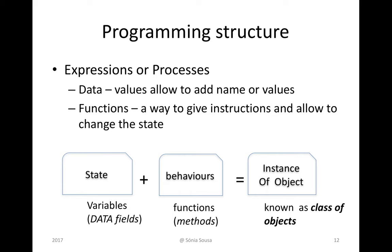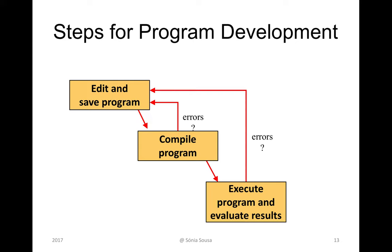A programming structure is based on a state that contains variables or data with values, and it has behaviors. A state plus a behavior represents an object in the real world. In terms of programming development, there are three main steps: first, use the Java syntax to describe your object — your statement plus your behavior; second, compile the program and correct any errors; third, execute the program and evaluate the results.